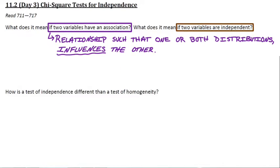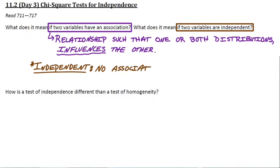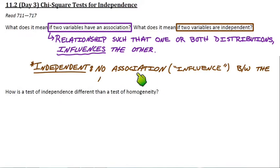So what does it mean to be independent? To be independent means you have no association — no association or influence between the two distributions.